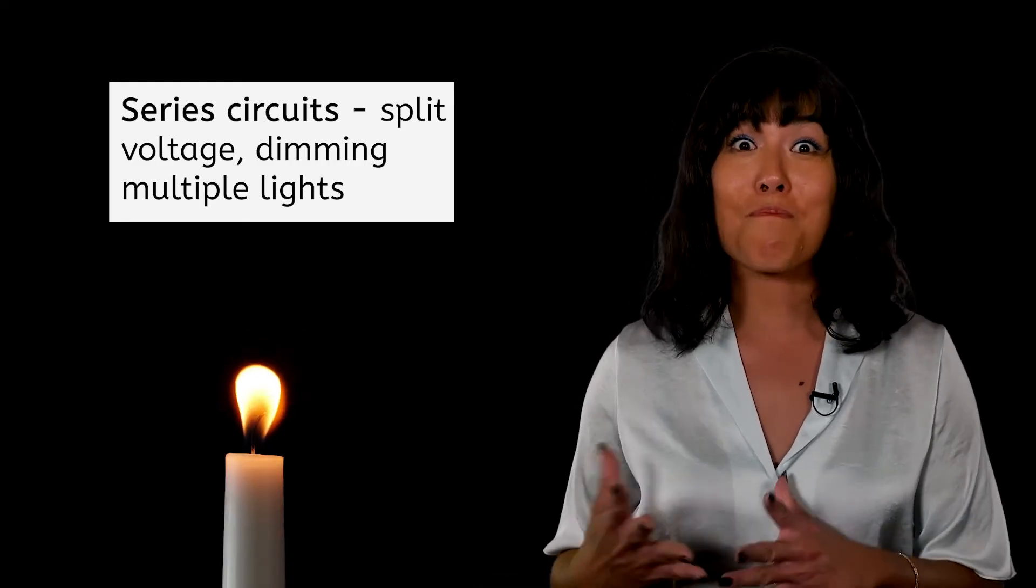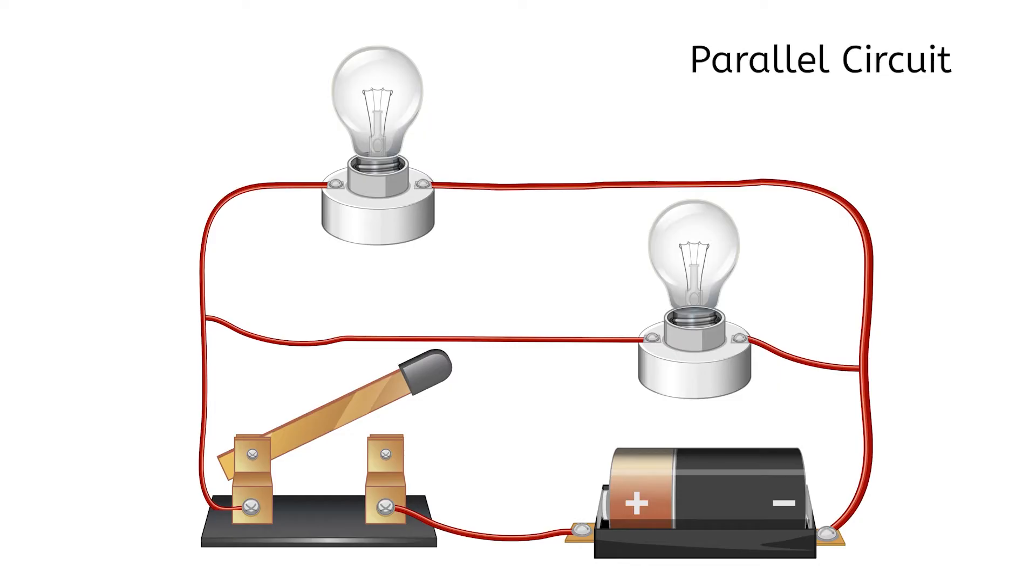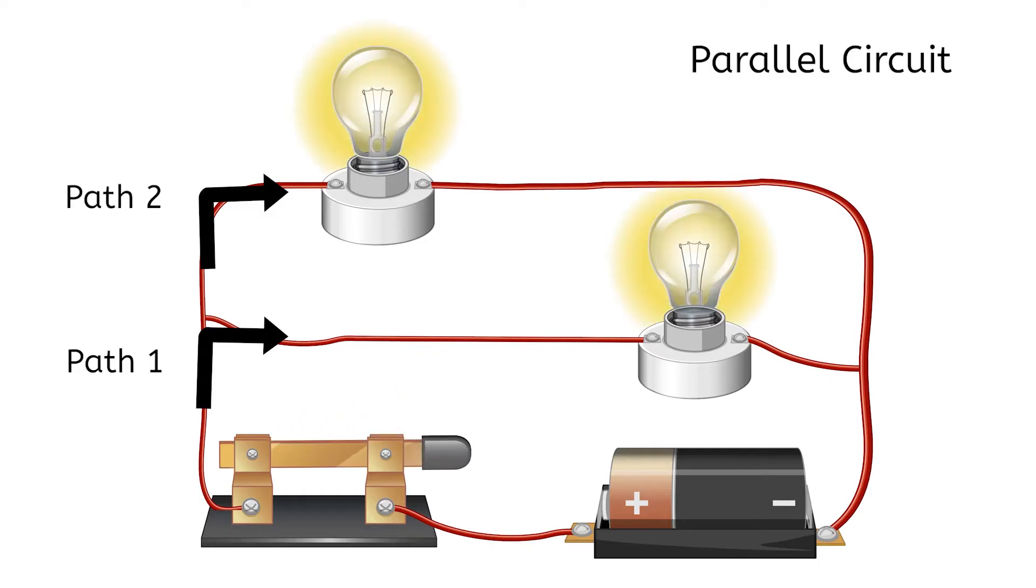A circuit that is wired in parallel gives multiple paths for the current to take. When the switch is closed, both bulbs light up.